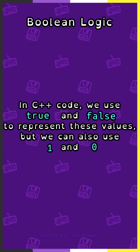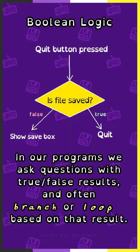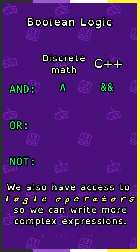In C++ code, we use true and false to represent these values, but we can also use 1 and 0. In our programs, we ask questions with true-false results and often branch or loop based on that result. We also have access to logic operators, so we can write more complex expressions.